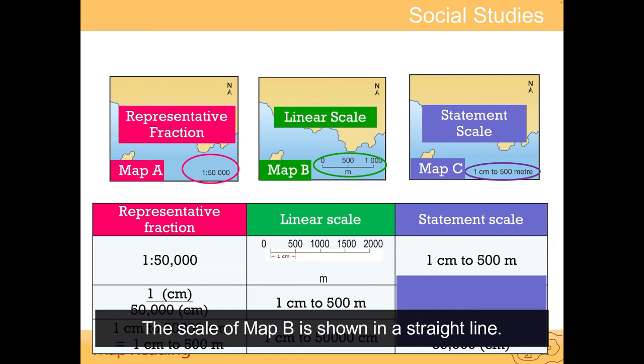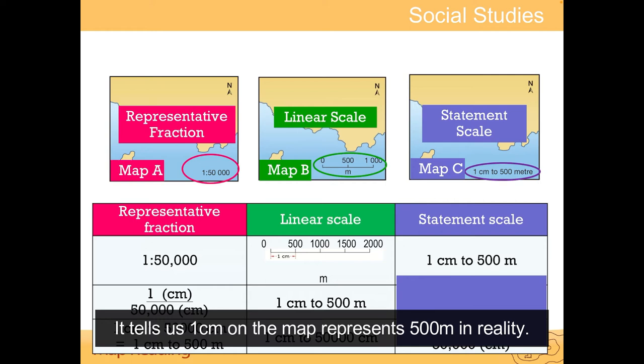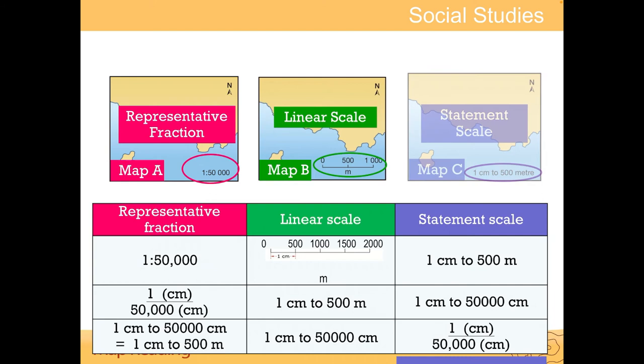The scale of Map B is shown in a straight line. Every section on the straight line is 1 cm long. It tells us 1 cm on the map represents 500 m in reality. Then 2 cm represents 1,000 m in reality.